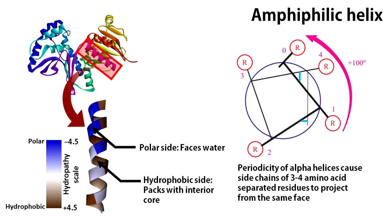This periodicity means that residues 3 to 4 amino acids apart in the sequence will project from the same phase of an alpha helix. This is of extreme importance in protein structure.